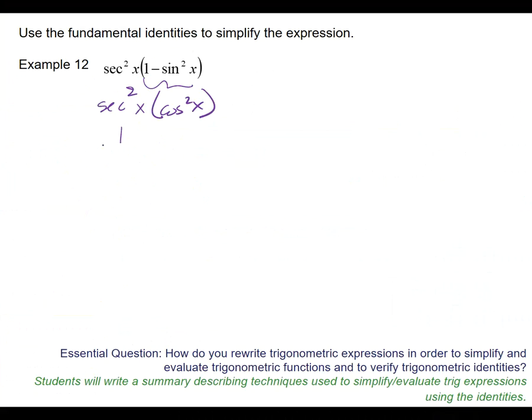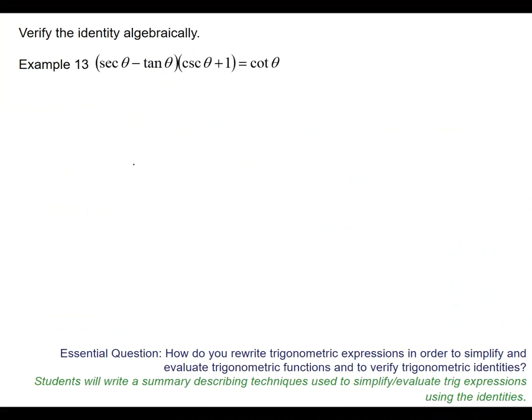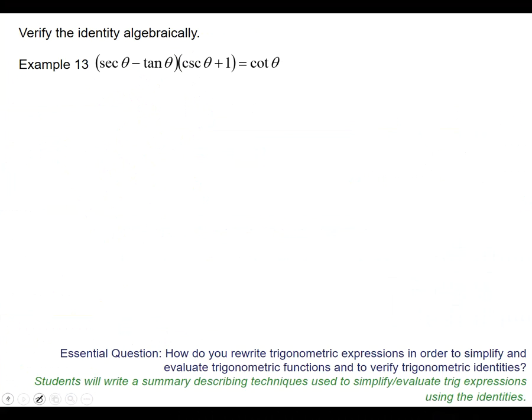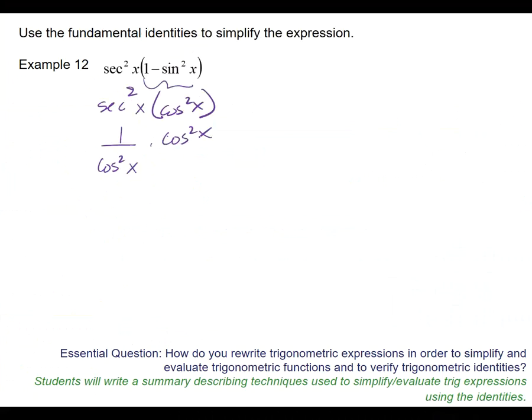It would be great if I could get that simpler, if I could do some canceling, that would be awesome. What's another name for secant? One over cosine, so I'm going to do one over, since it's a secant squared, I'm going to use cosine squared. So, one over cosine squared x, times cosine squared x. What happens with my cosine squared x's? Now you cancel, the final answer is one.